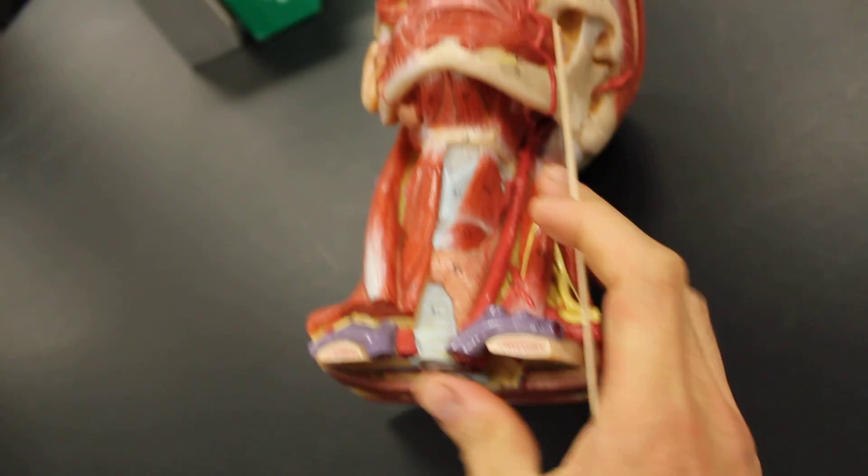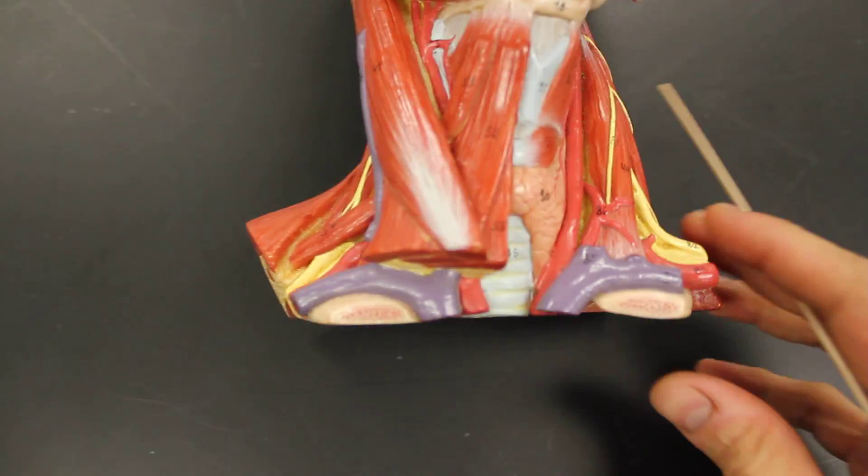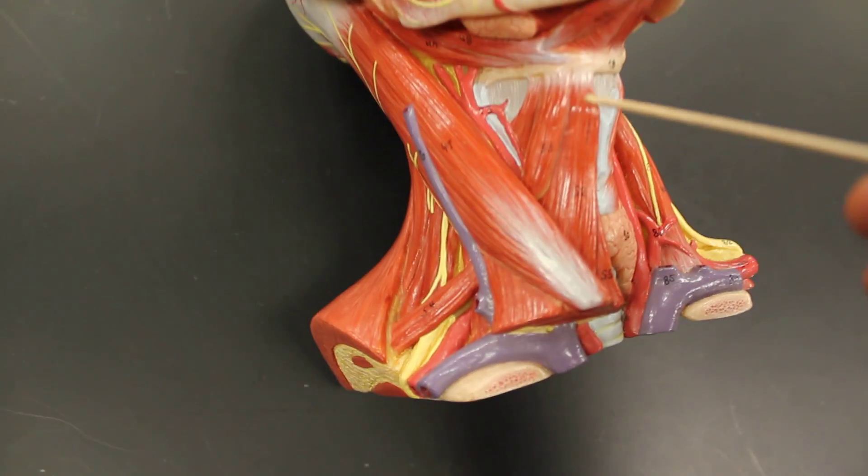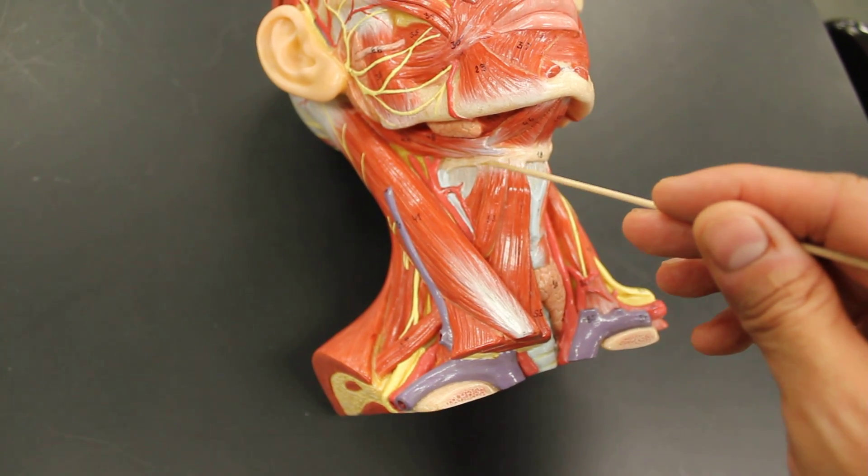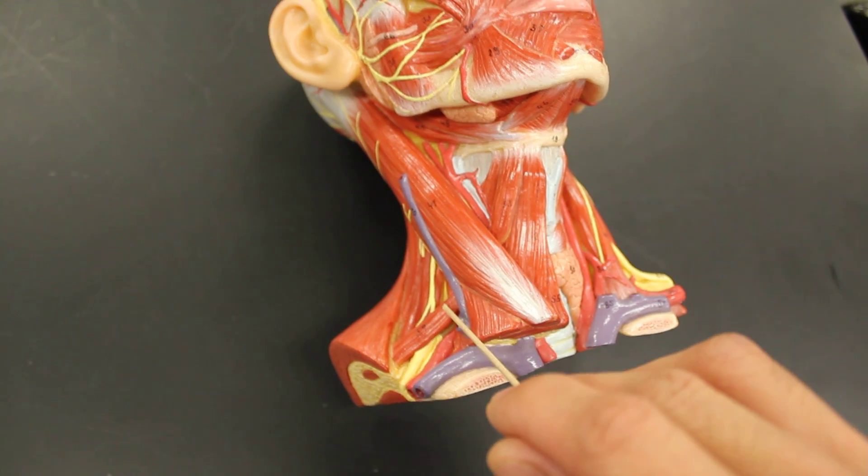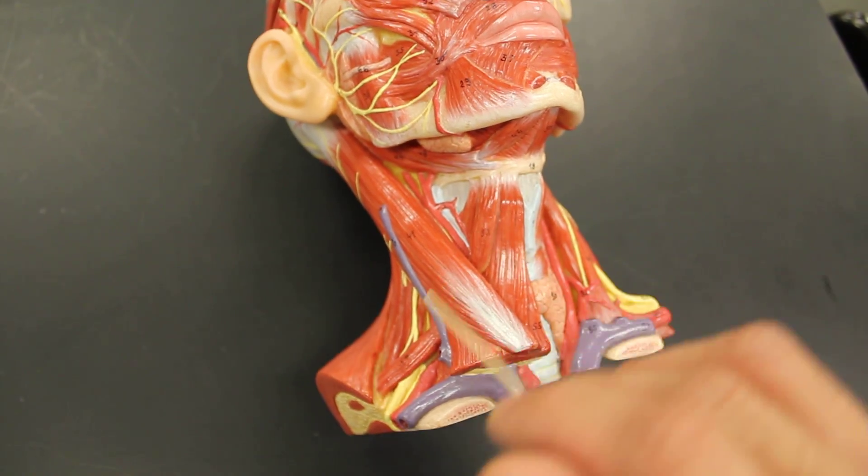The infrahyoid muscles are even a little bit more simply laid out. We have one that does have a strange name like digastric. It's called the omohyoid. You'll find this is the omohyoid coming from the hyoid bone, down comes a sling off the clavicle, and then becomes and attaches to the shoulder. Omo means shoulder, and so omohyoid.